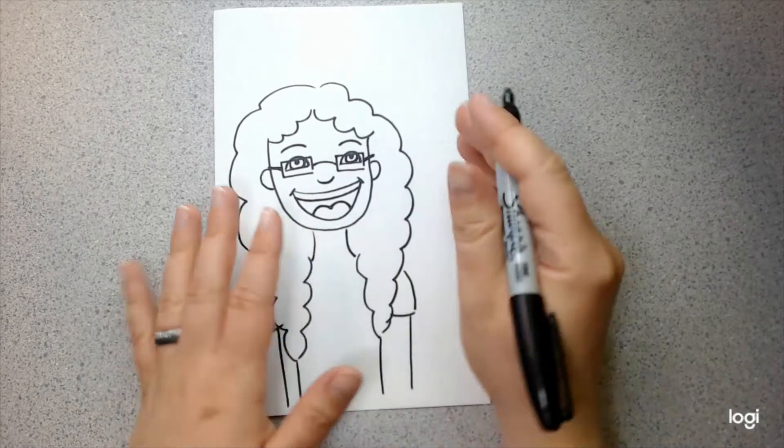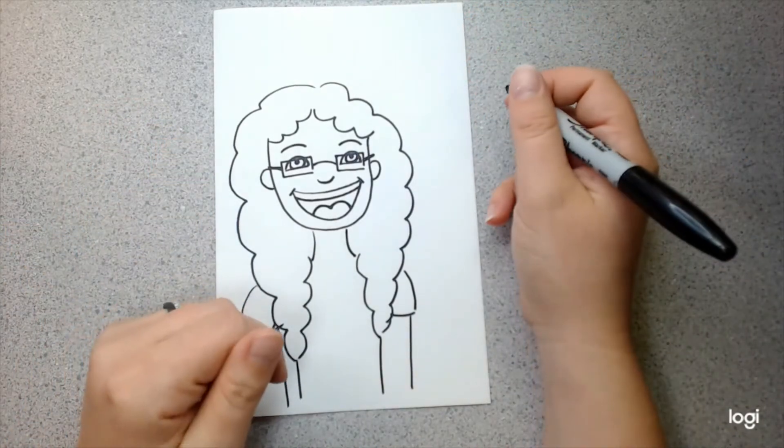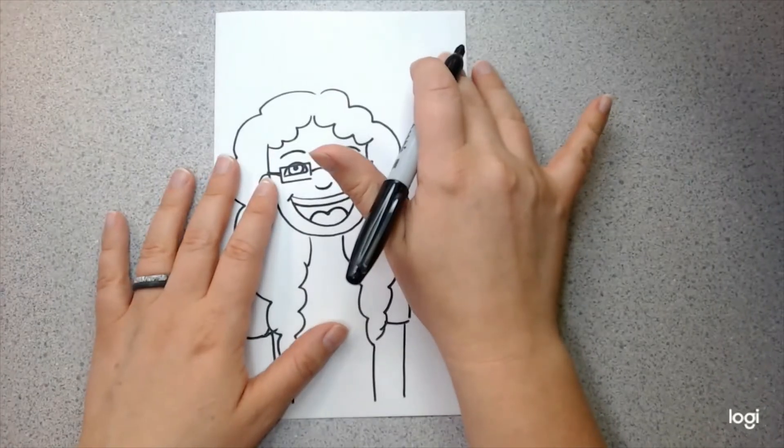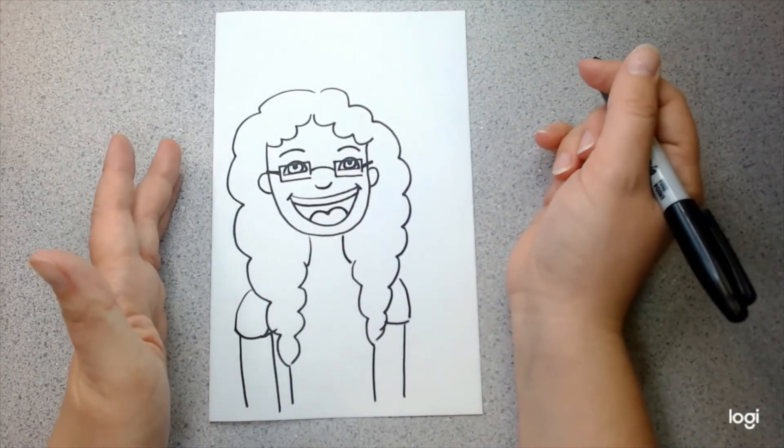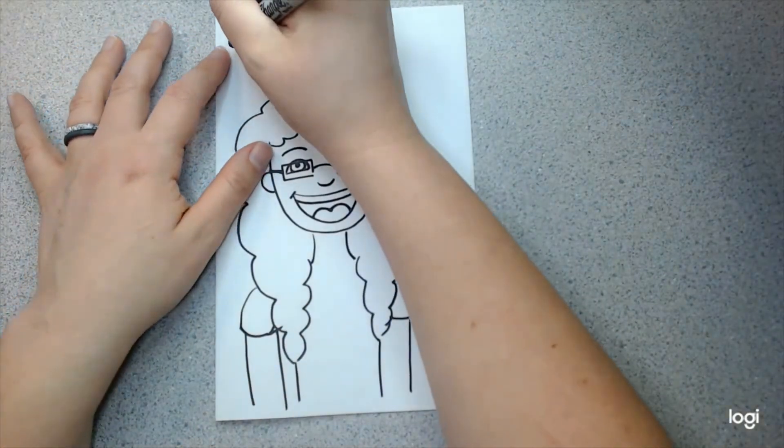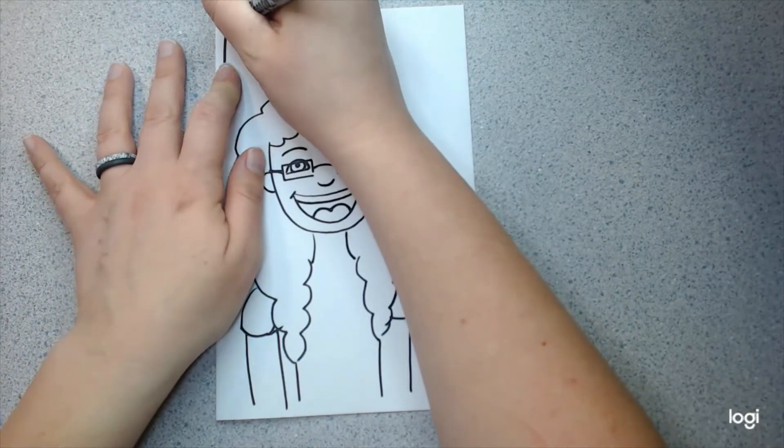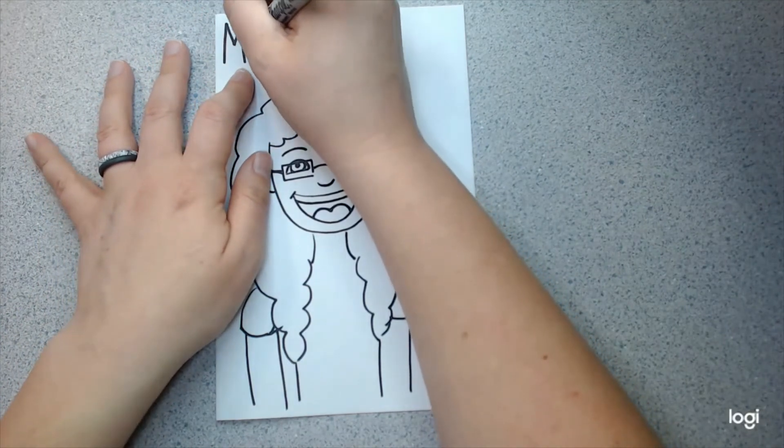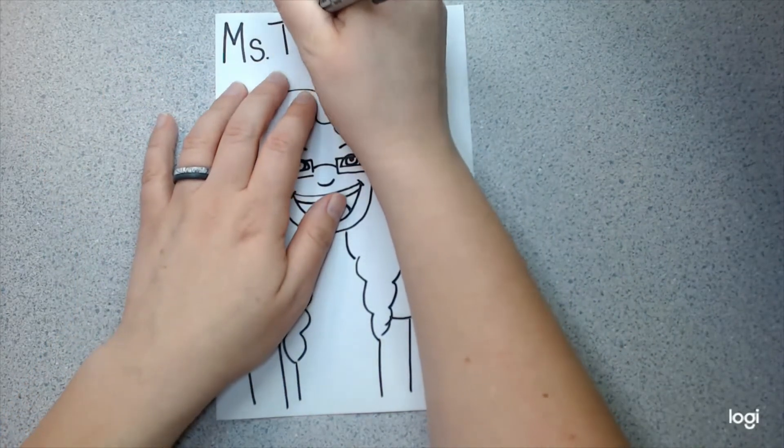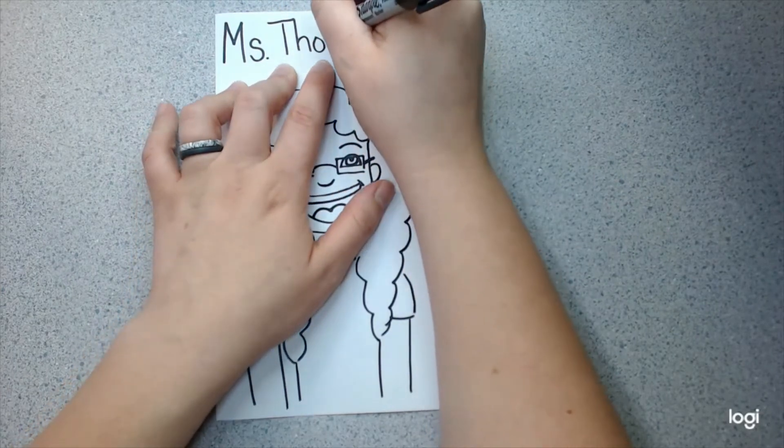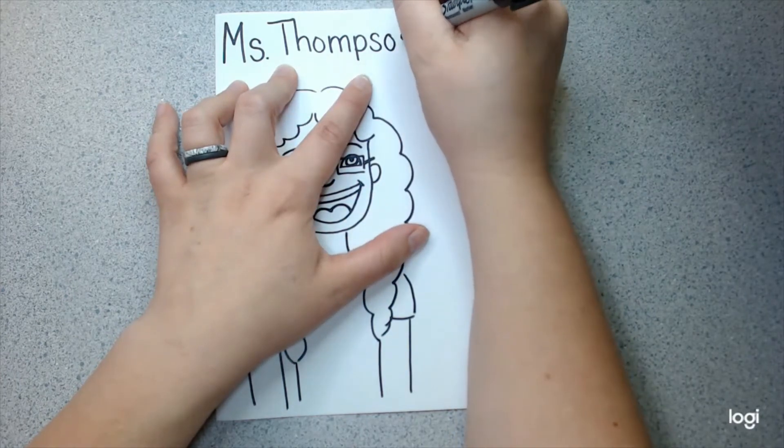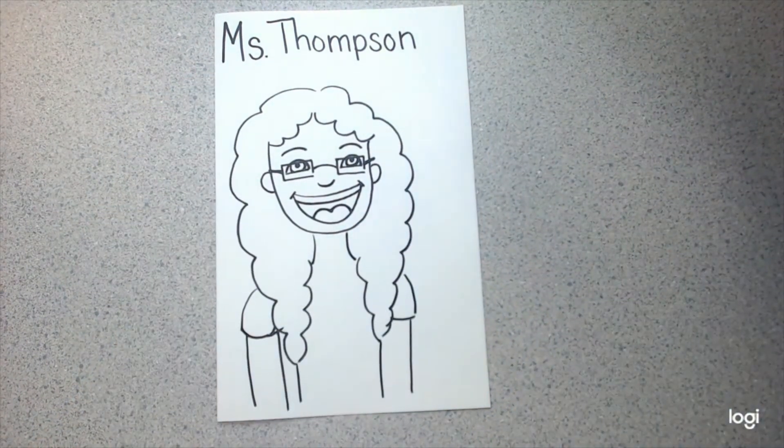So, once you're done with your outline, then it's time to color. But before we do that, I want to write my name on the top. Now, if you need help writing your name, you can ask your parents or someone that's at home with you to help you. But, I'm just going to write it right up here. Miss Thompson, that's me.